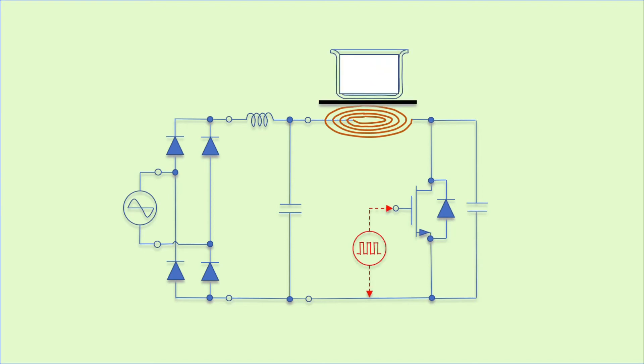The circuit can be divided into three stages. The first stage is the rectifier stage. It comprises four diodes as a bridge, which converts alternating current into direct current. The second stage is an LC filter.